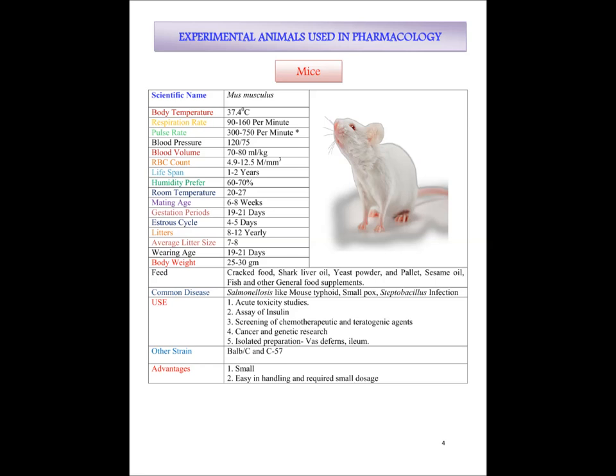Next is mice. Mice is the second most important animal used in the pharmacology lab. Body temperature of mice is 37.4 degree centigrade. Respiration rate is 90 to 160 per minute. Pulse rate is nearby 300 to 750 per minute. Blood pressure 120 by 70 — diastolic versus systolic. Blood volume 70 to 80 ml per kg. RBC count is 4.9 to 12.5 million per mm cube. Lifespan 1 to 2 years. The humidity preferred by mice is 60 to 70 percent. Room temperature 20 to 27 degree centigrade.